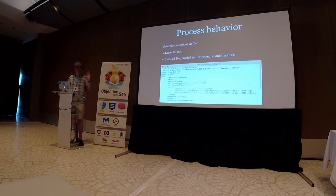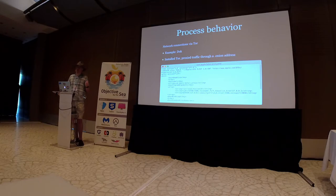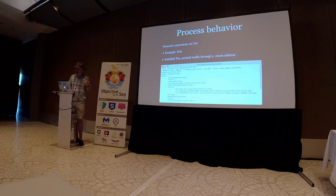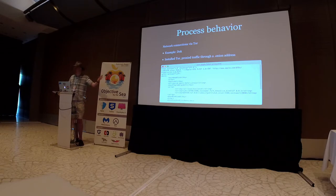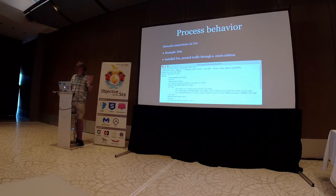Network connections to TOR are another thing to look at. TOR is legitimate in itself, but if you see a weird process that shouldn't be on the system communicating with TOR, that's a problem. Dock used a plist named com.apple.safari.proxy.keylist — nothing suspicious there, right? In the code, it was directly running an open source TOR tool to proxy traffic through a .onion address. Just about everything about this is suspicious, especially TOR traffic going out launched by a random plist file.